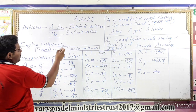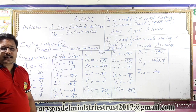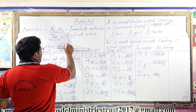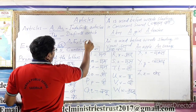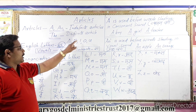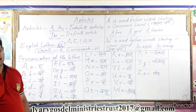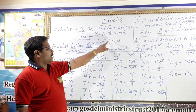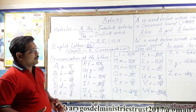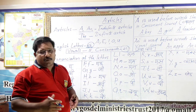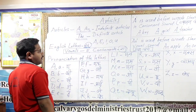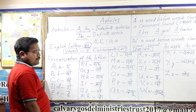The English alphabet has a total of 26 letters. Out of these, 5 letters — A, E, I, O, U — are known as vowels. In Hindi language we call them 'Swar.' The remaining 21 letters are called consonants, which in Hindi we call 'Vyanjan.'